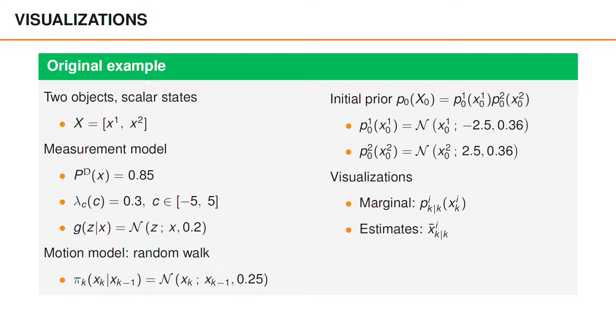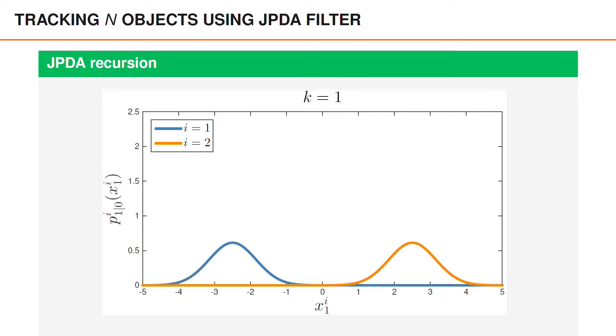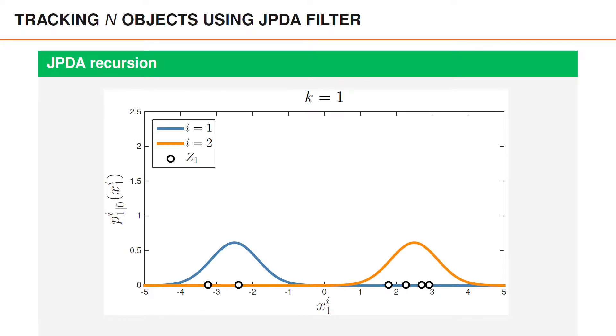For the visualization, we will again look at the marginal densities and the estimates. At time zero, we have the initial marginal priors, we predict to time one, and we have some measurements, six of them illustrated by white circles.